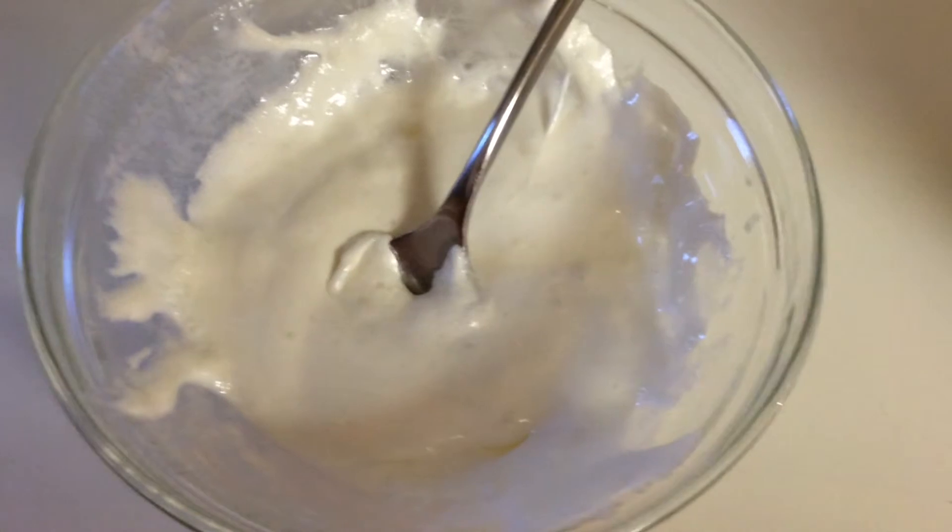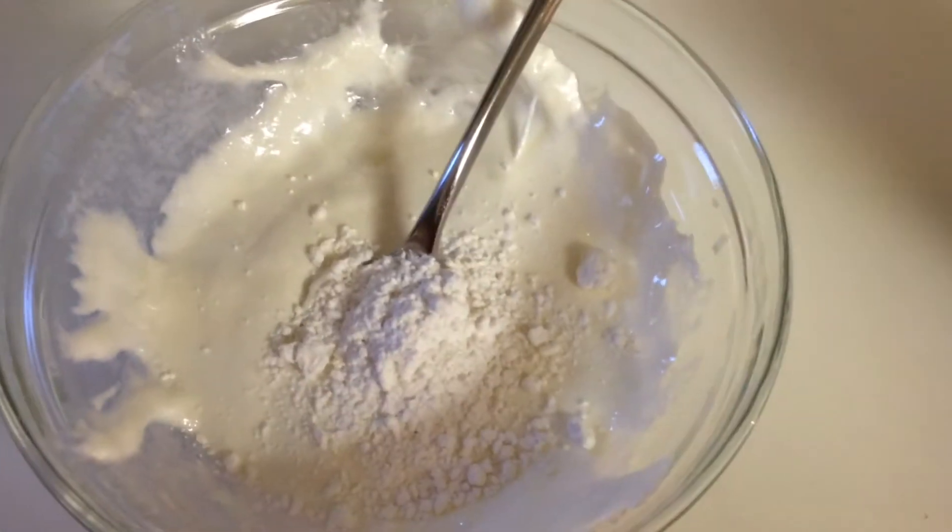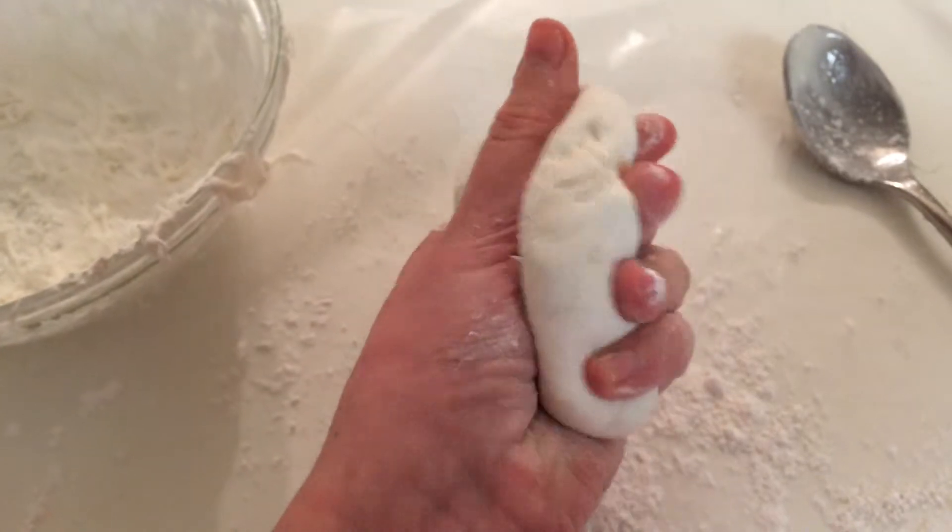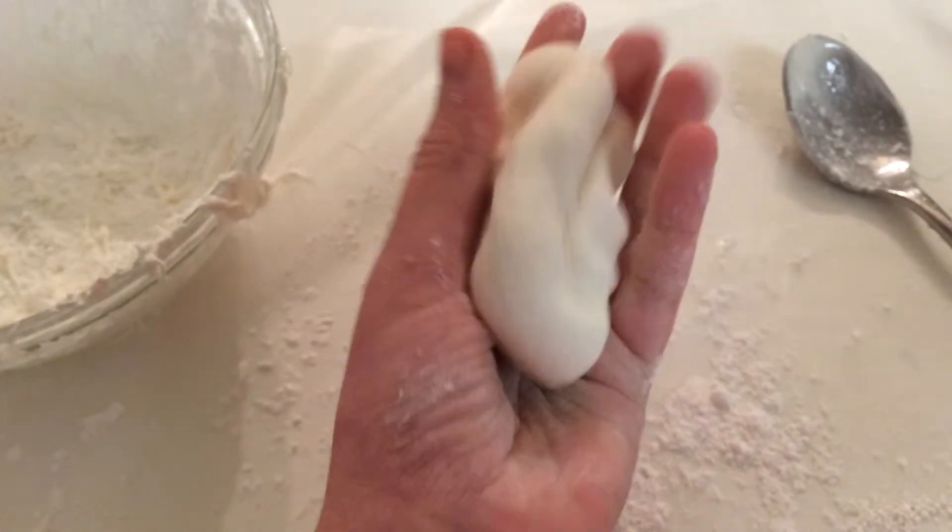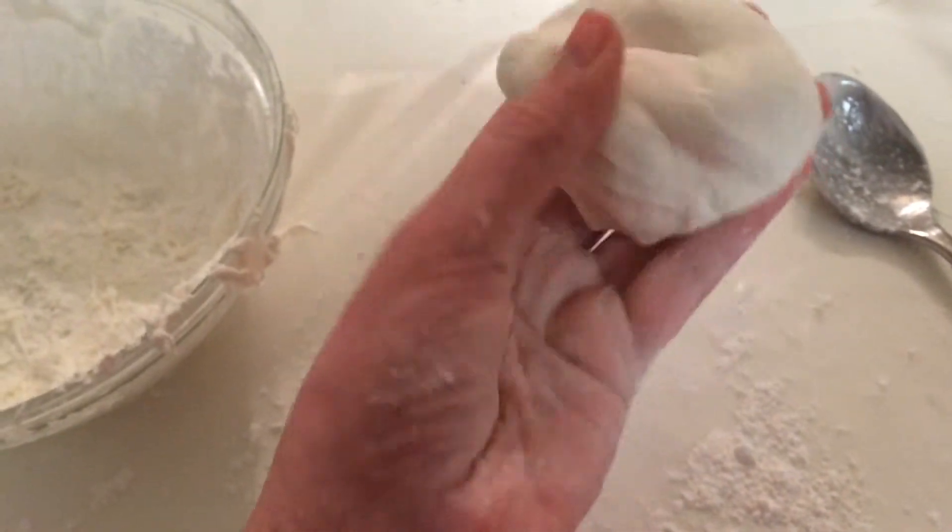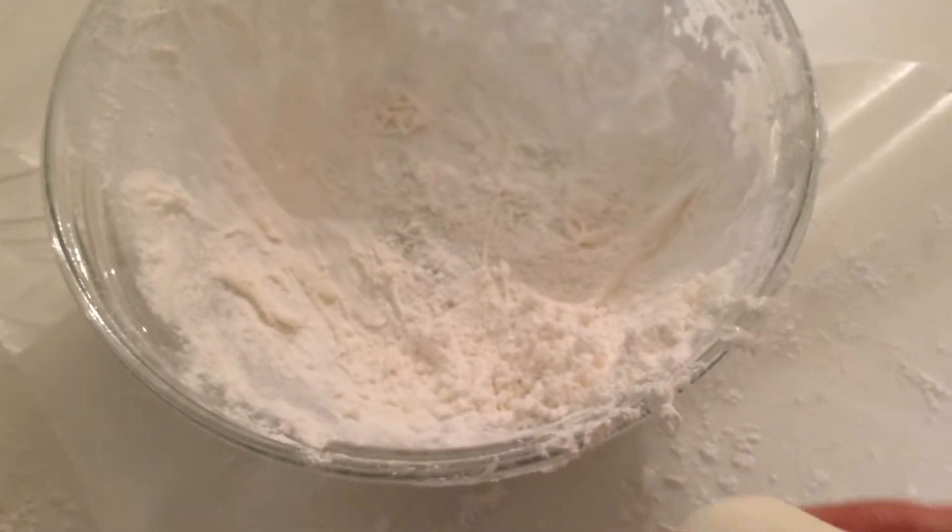Once you have this consistency, add your powdered sugar. Add a bit more. You're going to need a lot for this. And then keep kneading it with your hands just until you get this doughy consistency. It's going to take a lot of powdered sugar, so just keep adding powdered sugar until you have dough.